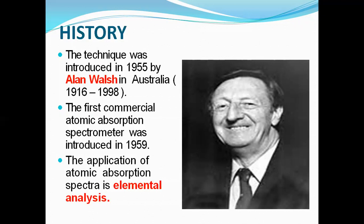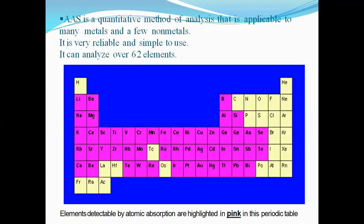The main application of this spectroscopy is elemental analysis. AAS is a quantitative technique applicable to many metals, few nonmetals, and nowadays also to metalloids — meaning it is used for the determination of metals, nonmetals, metalloids, etc. It is very reliable and simple to use.